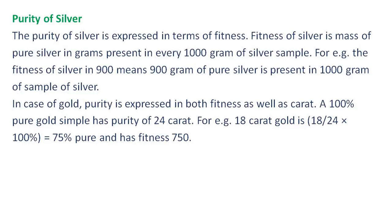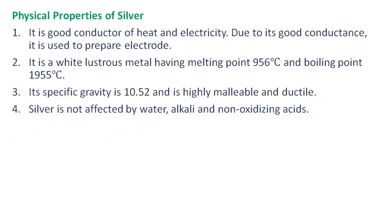In the case of gold, purity is expressed in both fineness as well as carats. A 100% pure gold sample has a purity of 24 carats. For example, 18 carat gold is 18/24 × 100% = 75% pure and has a fineness of 750.